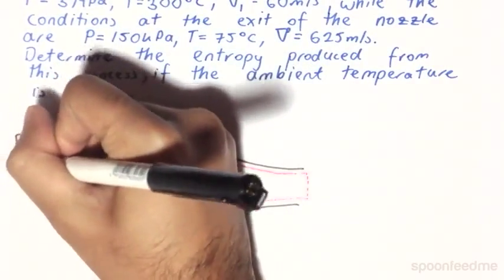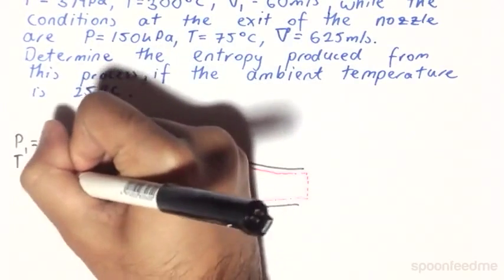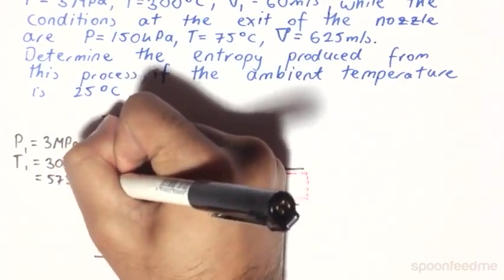We have a temperature of 300 degrees Celsius, which is 573.15 Kelvin.